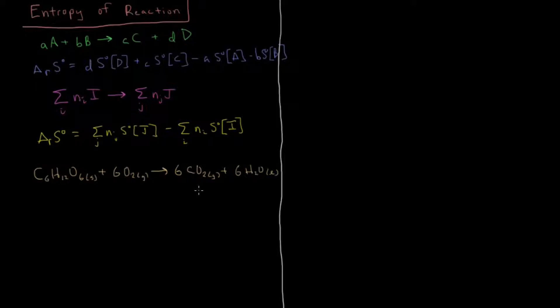So before we start here, let's do some predictions of what we think this sign of this is going to be. So we want to look at the number of moles of gas produced first, because gas has the highest molar entropy of any phase. We have 6 moles of gas in our reactants, 6 moles of gas in our products, so those are going to be fairly equal to each other and will probably cancel out for the most part.